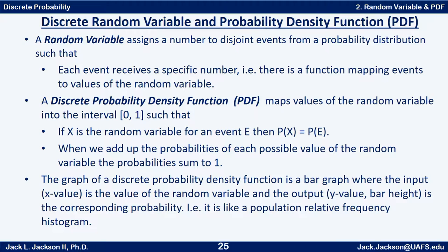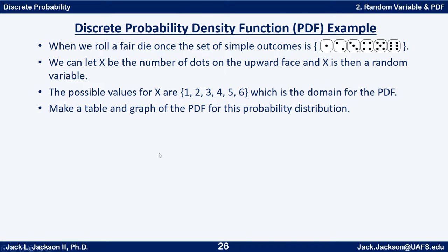We can make a table of X and PDF(X) values and graph it. We typically graph these as bar graphs. The graph of a discrete probability density function is a bar graph where the input X-value is the value of the random variable and the output Y-value or height of the bar is the corresponding probability. In other words, it's just like a population relative frequency histogram.